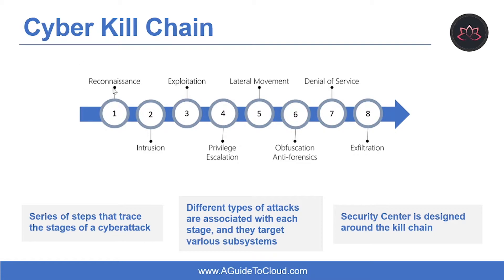The first step is Reconnaissance — the observation stage where attackers assess your network and services to identify possible targets and techniques to gain entry. The second step is Intrusion, where attackers use knowledge gained in the reconnaissance phase to get access to a part of your network. This often involves exploiting a flaw or security hole.